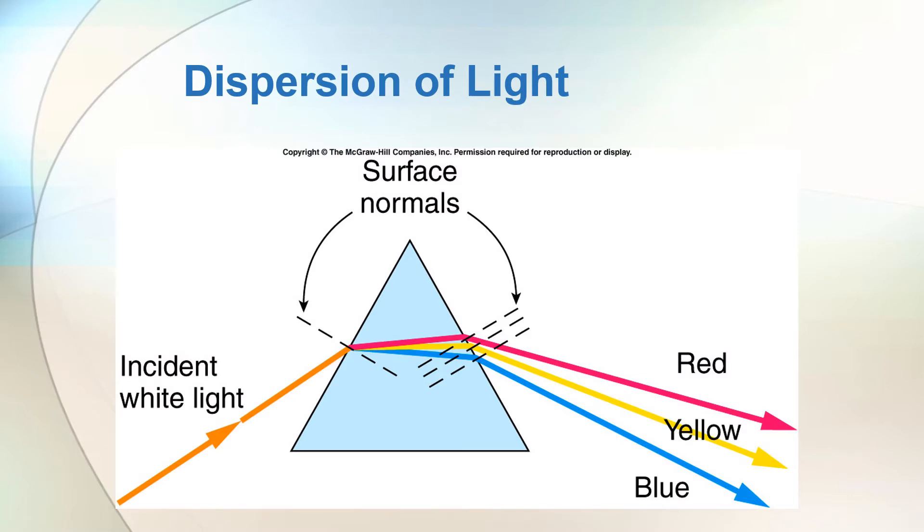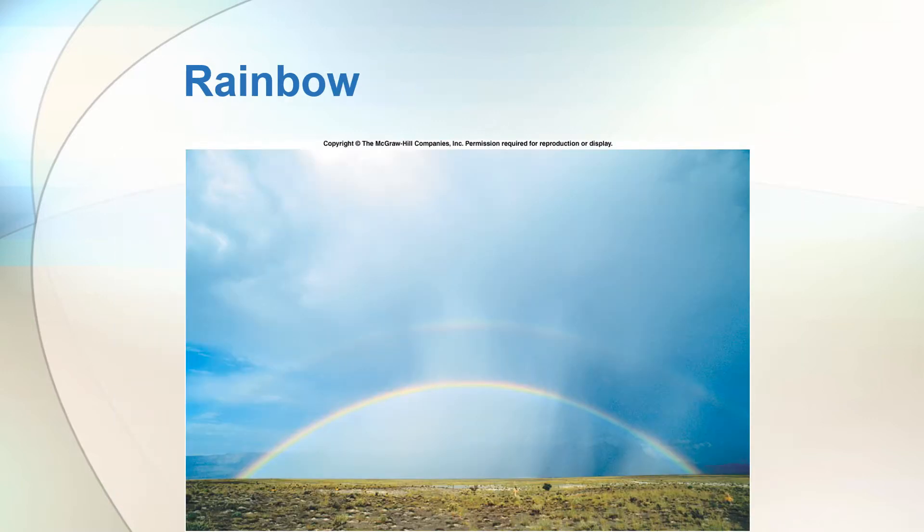As white light enters the prism, the different colors of light will have different speeds and different degrees of bending, allowing them to separate from each other. A water droplet serves as a prism in the sky.